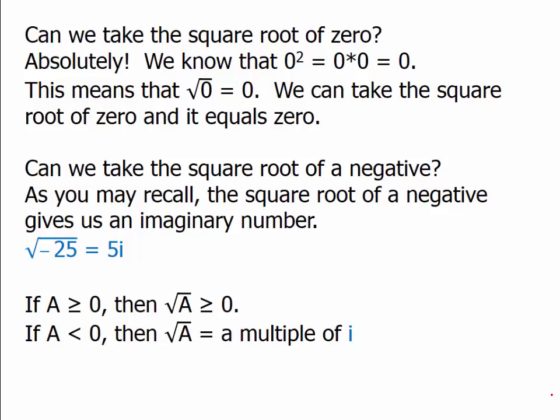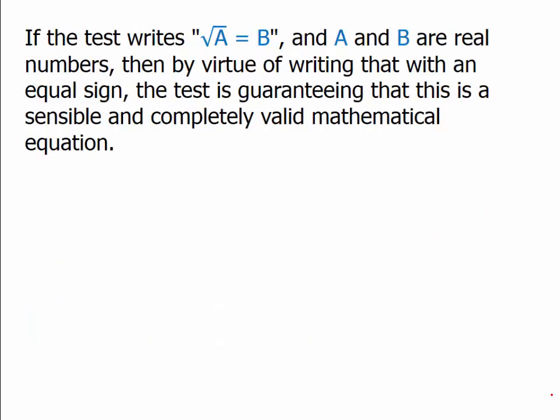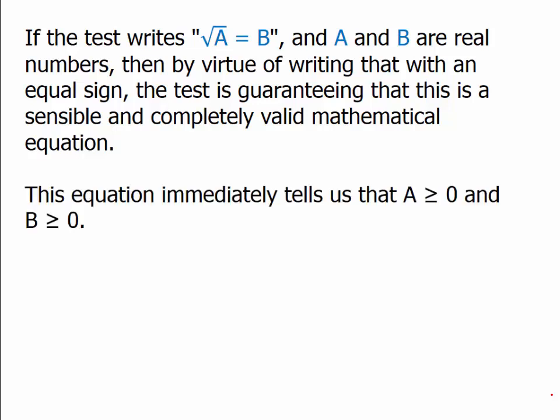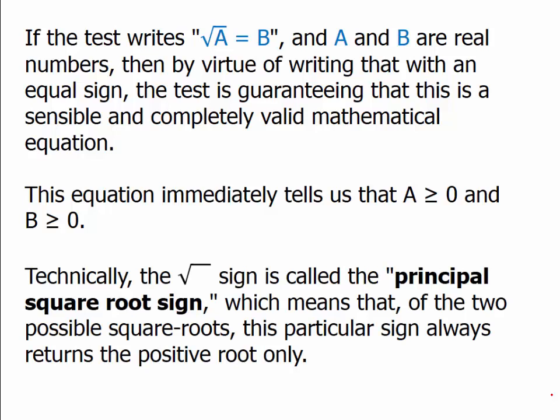If the test writes square root of a equals b and we're told a and b are real numbers, then the test is guaranteeing this is a valid equation. This means we know immediately that a has to be greater than or equal to 0 and b has to be greater than or equal to 0. Technically, that sign is called the principal square root sign, which means that of the two possible square roots, this particular sign returns the positive root only. Many people don't know that — they just call it the square root sign, but it's actually the principal square root sign, meaning the positive-only square root sign.